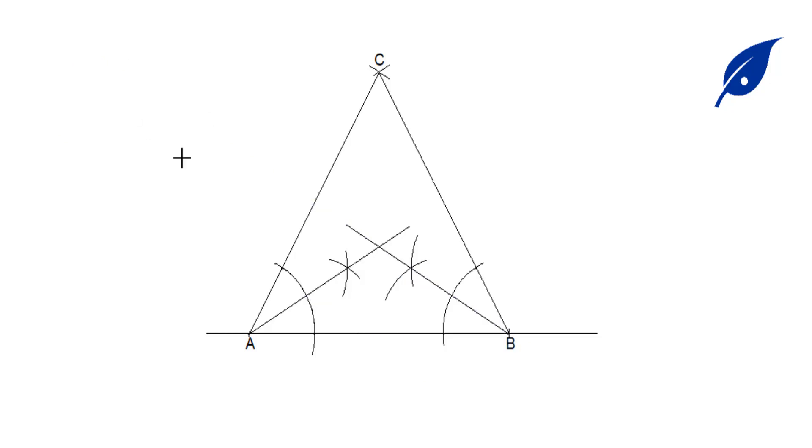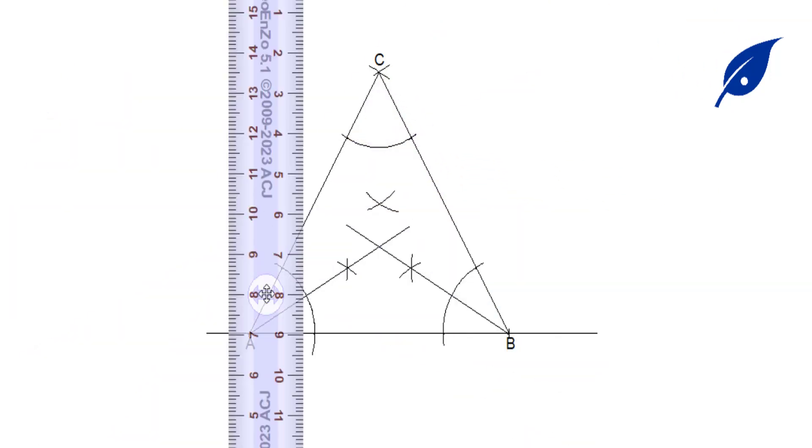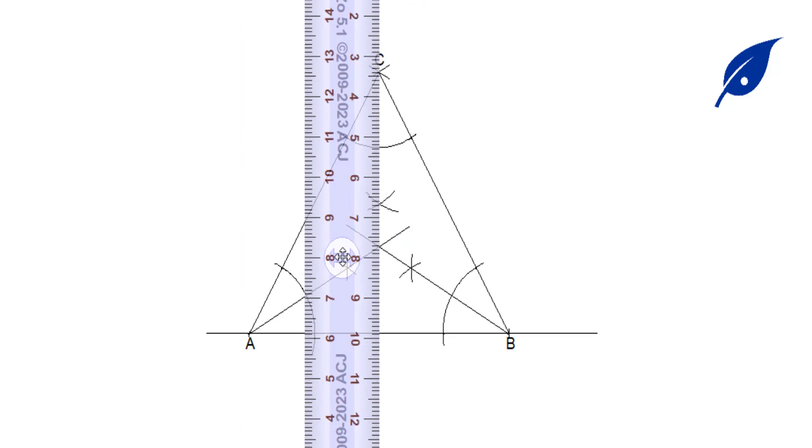Next, we bisect angle ACB. After bisecting angle ACB, when the line touches the other lines coming from the other angles, we'll get the center which is O. Also, where the line touches line AB, we call that point D.